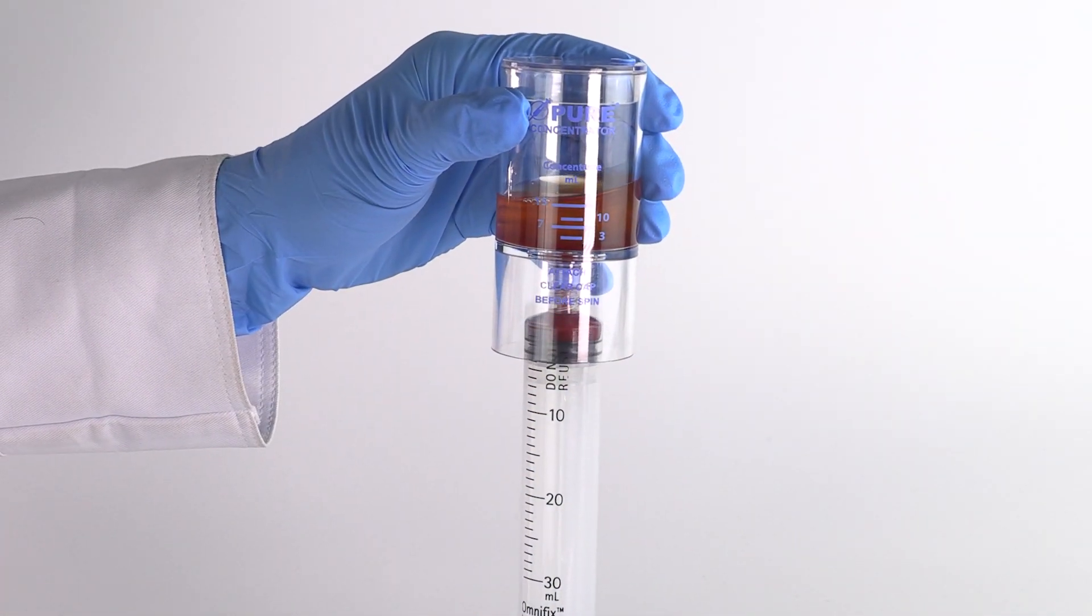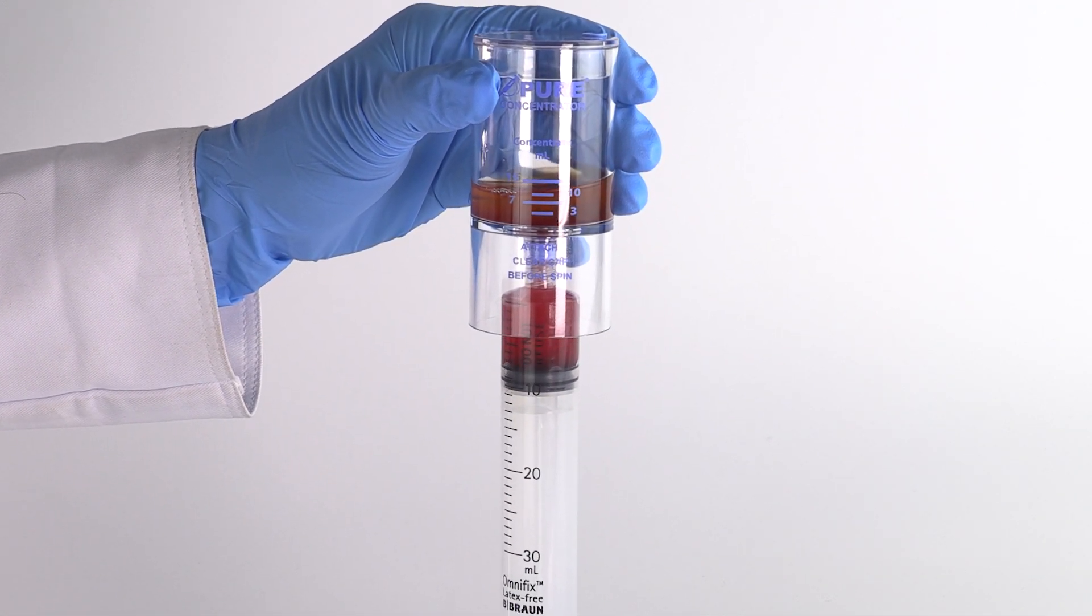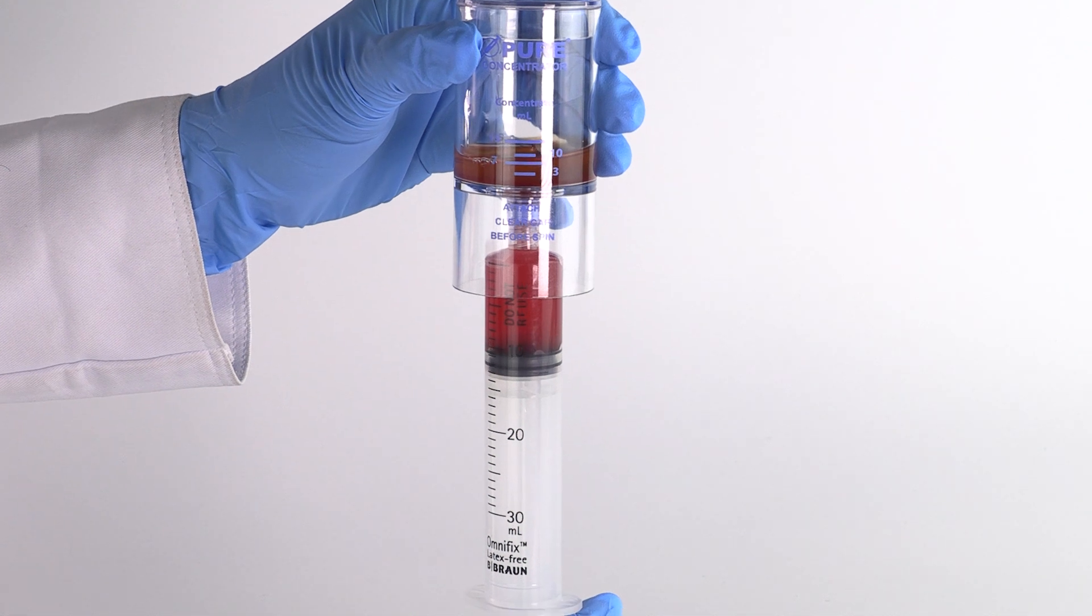Attach a sterile syringe to the needleless port and aspirate the bone marrow plasma, leaving 3 to 4 milliliters of solution in the device.